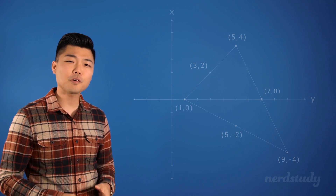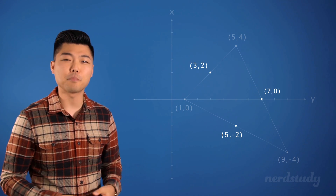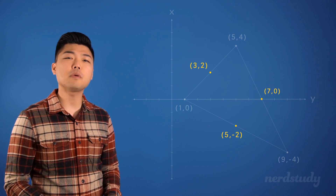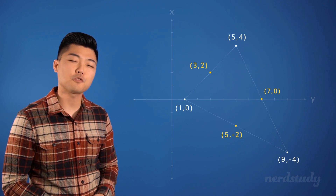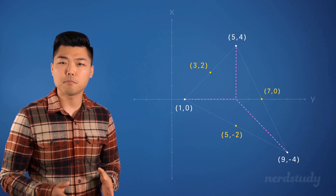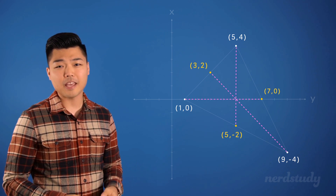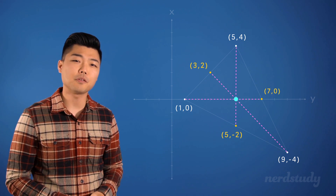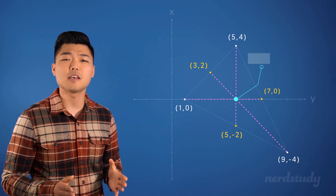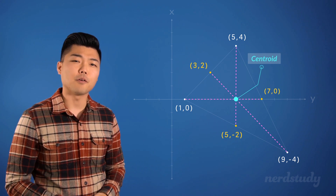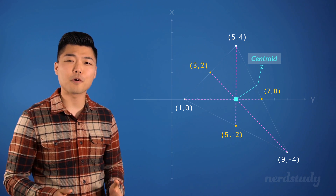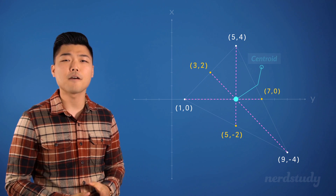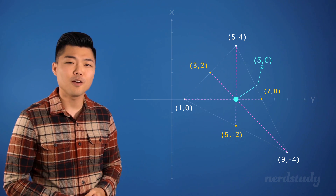Good. So it looks like we've got our three midpoints. Now that we have these midpoints, we can draw our median lines from each of the points of the triangle to their opposite midpoints. Let's not forget that the intersection of all of the medians in a triangle is called the centroid. We can just eyeball the coordinates of the centroid and see that it is sitting at (5, 0).